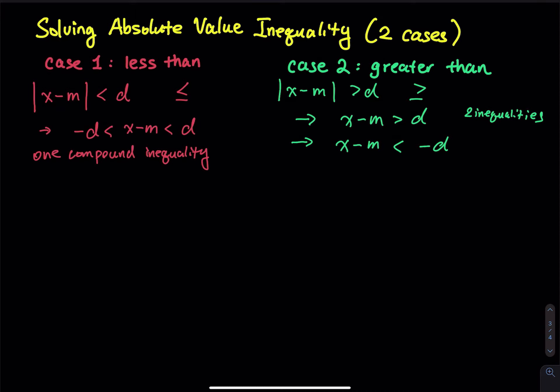If you see the absolute value of x minus m less than d, you can break this down into x minus m is between positive d and negative d — one compound inequality. On the other hand, if you have absolute value of x minus m greater than d, the mouth is facing the absolute value, then you break that into two inequalities: x minus m greater than d, and x minus m less than negative d, reversing the symbol. But that is case 2, which we do in the next video.